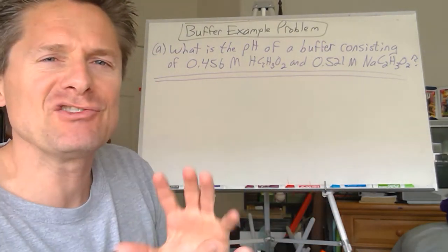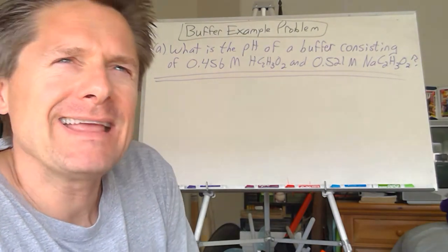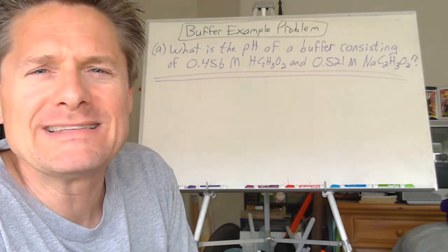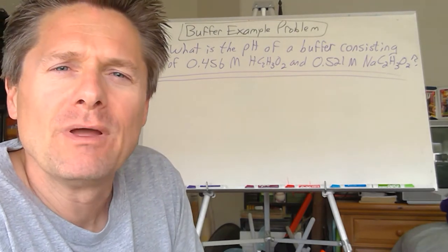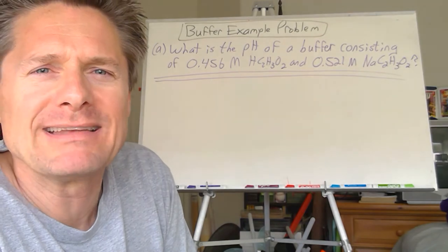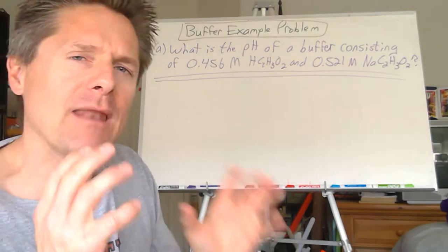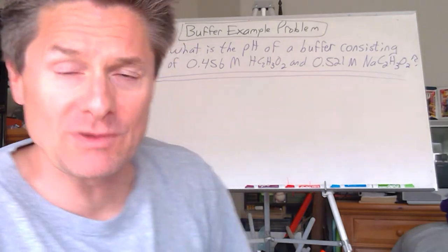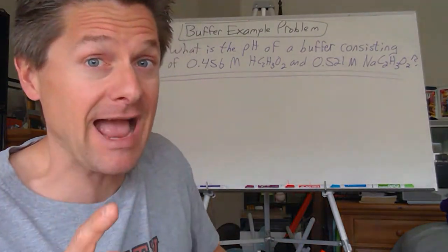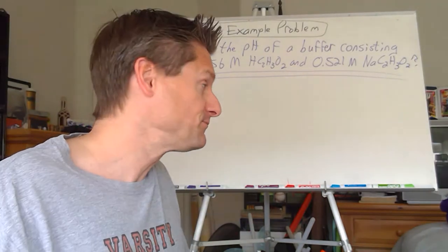If those concentrations differ by a factor of 10 or more — 100 or so difference — that buffer starts to break down; it's outside of the effective buffer range. They've got to be pretty close. Ideally they're exactly the same so they cancel out in the Henderson-Hasselbach equation.